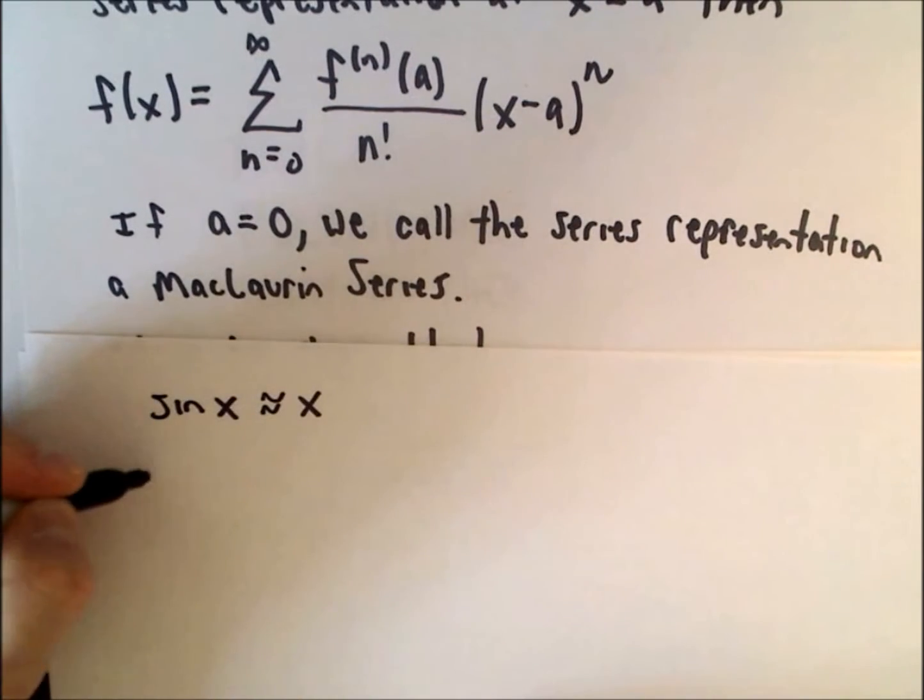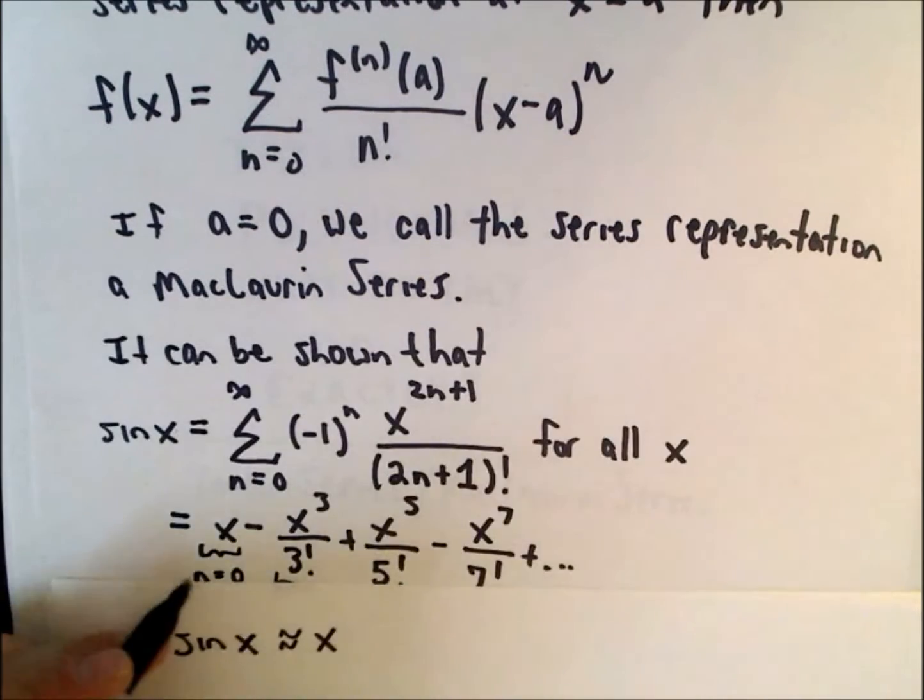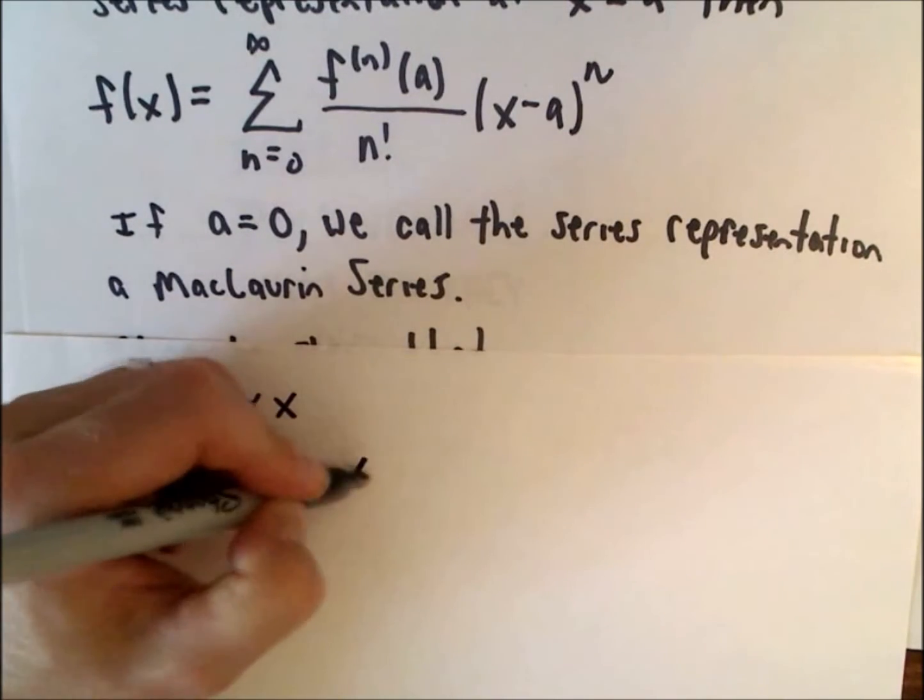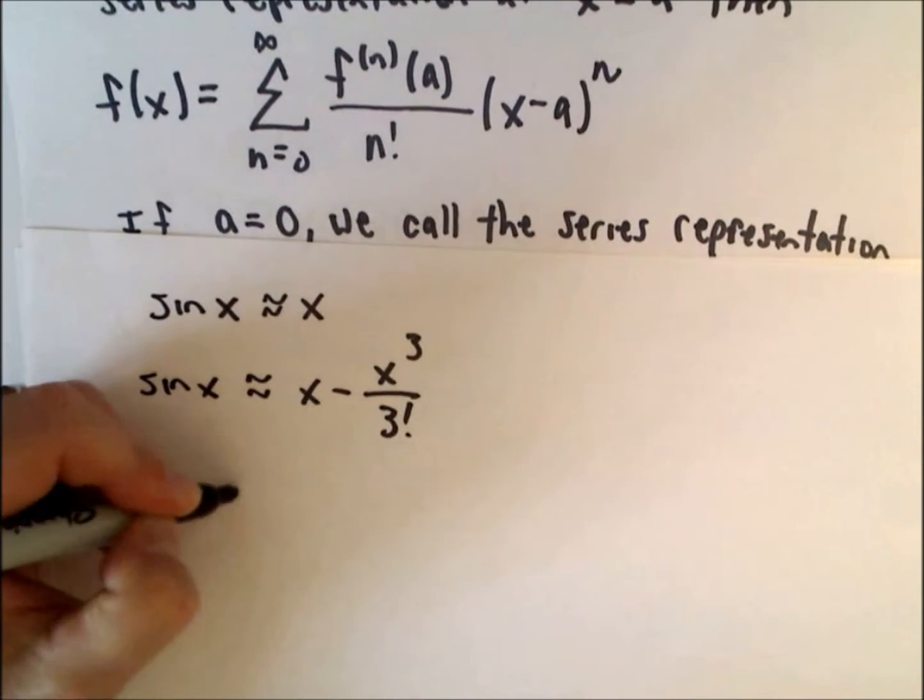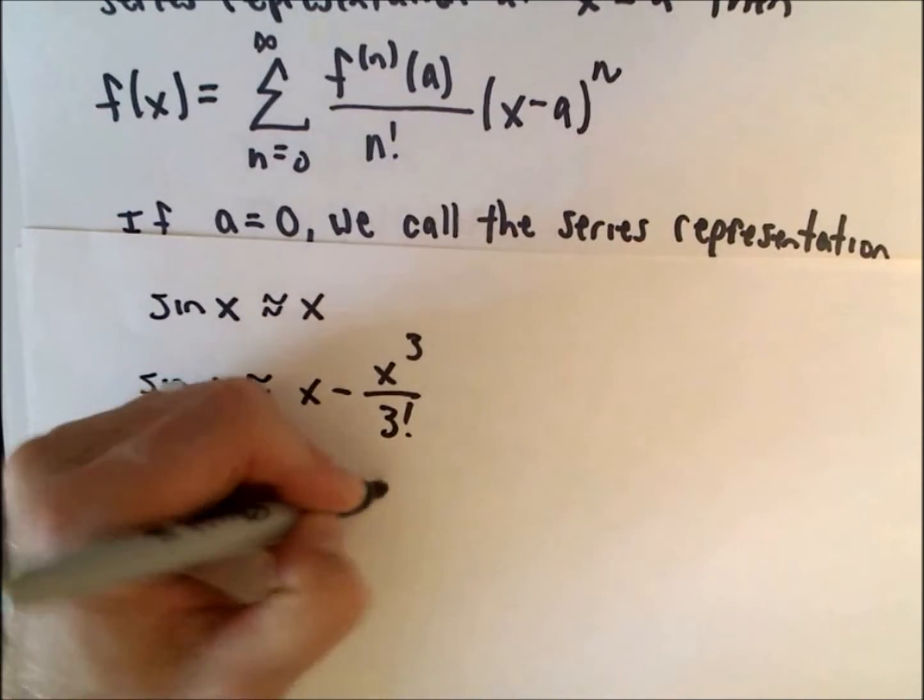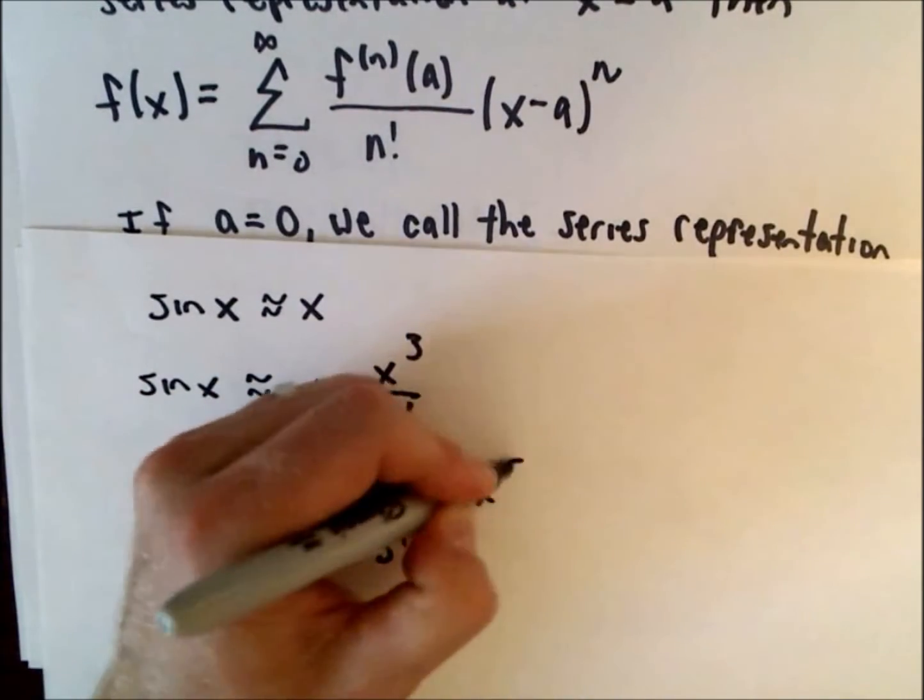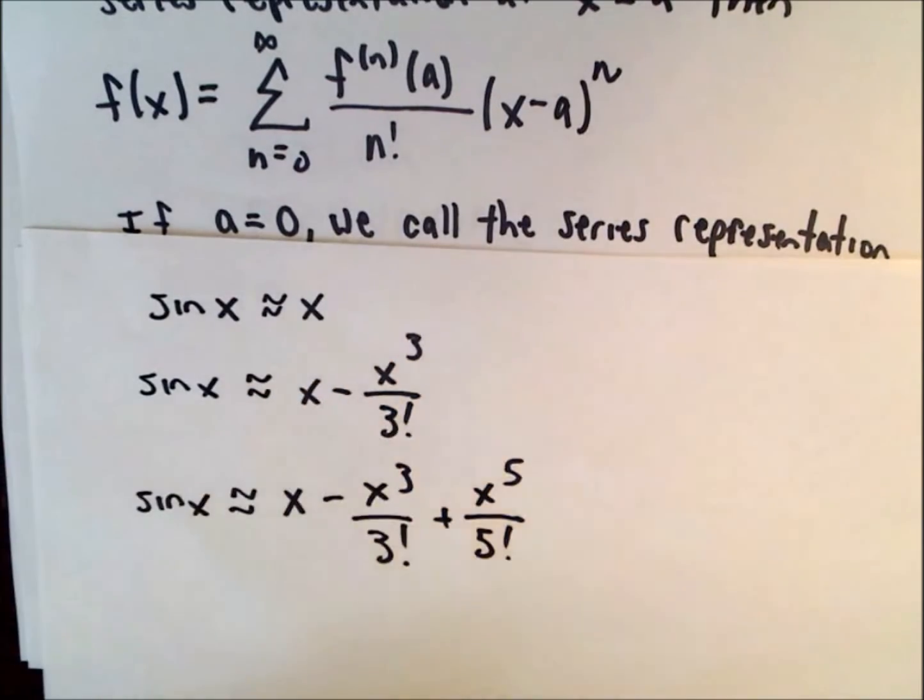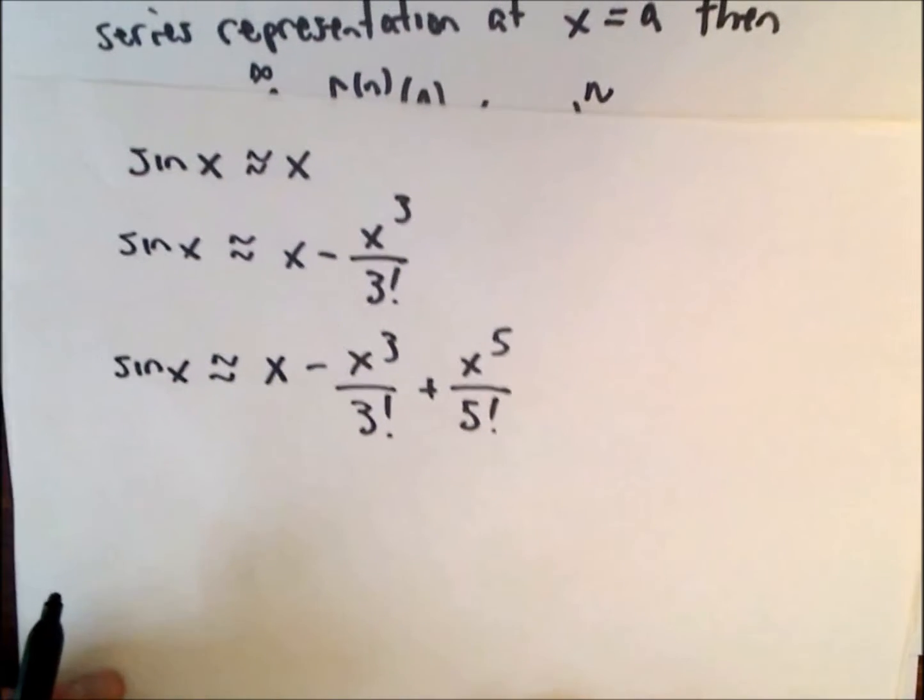That's just the very first term that you get out, so it's probably not going to be the best approximation. An even better approximation would be to use the first two terms x minus x to the third over three factorial. And an even better approximation would be to use the first three terms.